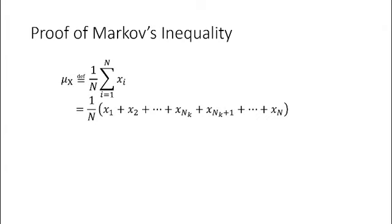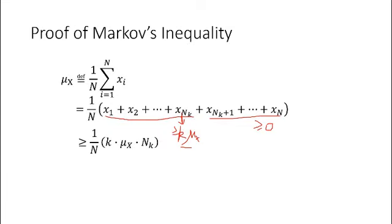Now we prove Markov's inequality. We begin with the definition of mean. By definition, the mean of the population equals 1 over N times the summation of all data. So, we rewrite the summation as the expansion in decreased order. We can see that each of the first N_k terms of the summation are greater than or equal to k times the mean, which is by assumption. Thus, the summation must be greater than or equal to k times the mean times N_k, which implies that the mean is greater than or equal to k times the mean times N_k over N.